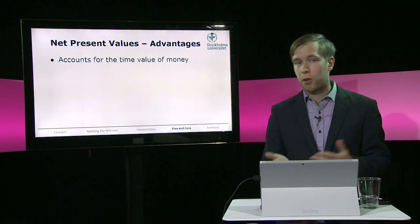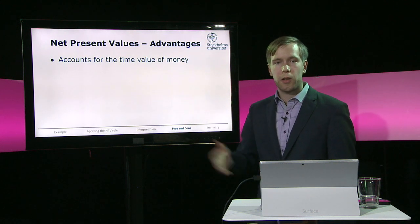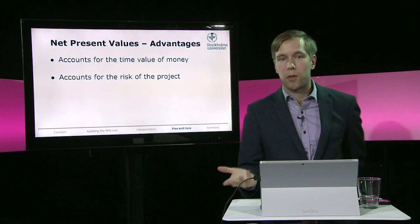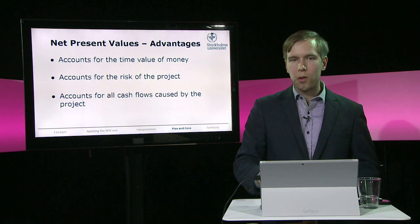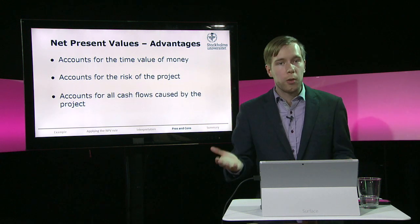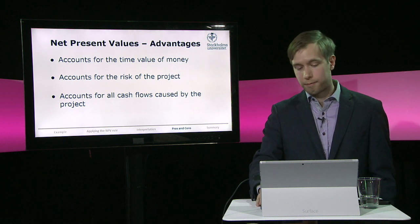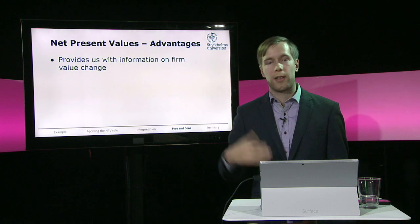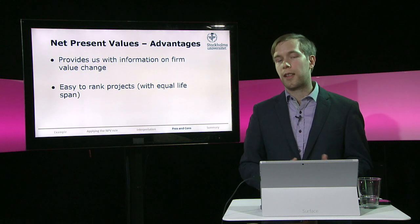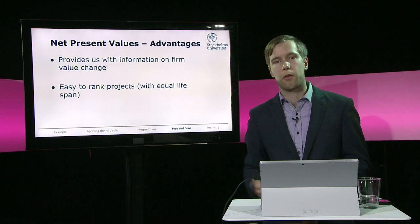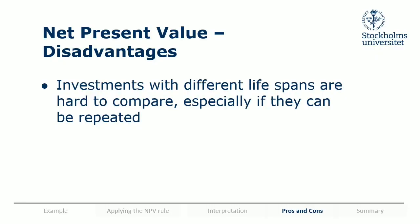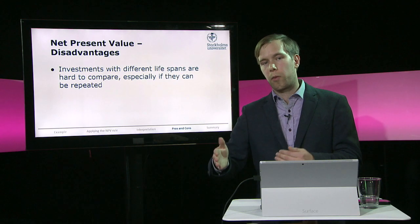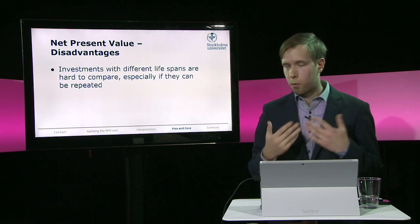What are the advantages of this method? It accounts for the time value of money — we do that when we use the interest rate. It accounts for the risk of the project, since the interest rate can be adjusted to the risk. We also account for all cash flows caused by the project — not all methods do this. It also provides information on changes in firm value, and it's easy to rank projects, at least if they have the same lifespan. One disadvantage: if projects have different lifespans and can be repeated, they are harder to compare with NPV — we'll see a method to handle that later.